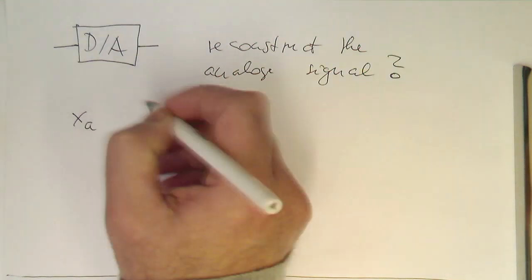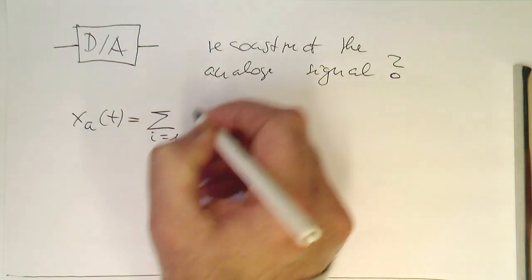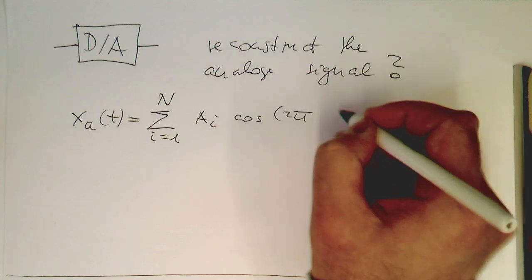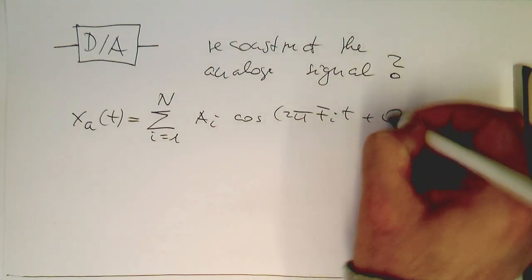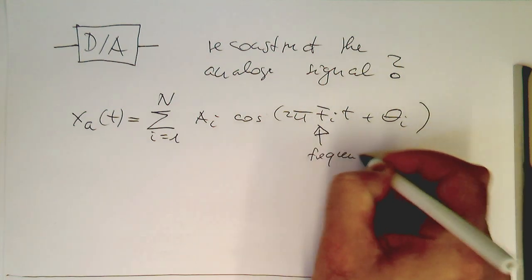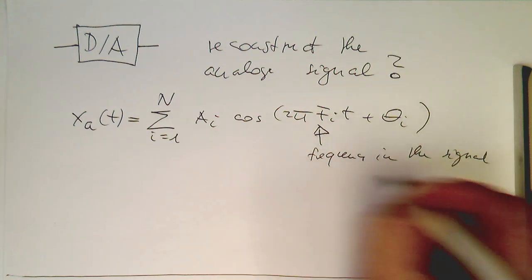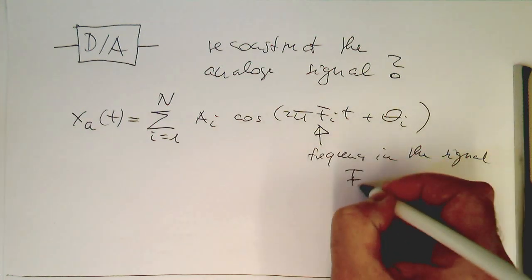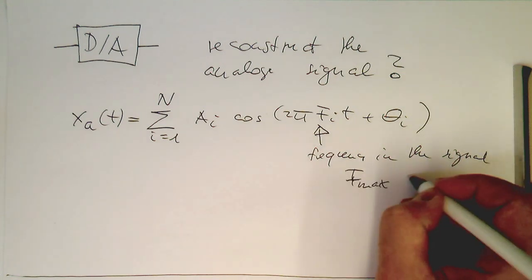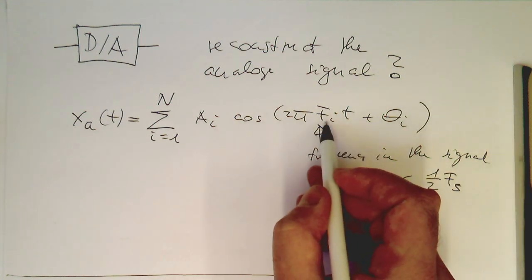So let's describe our signal as a superposition of different sine waves. So let's say cosine and then pi f i t plus theta i. So these are all the frequencies in this signal. And obviously all these frequencies, so f, if we have a maximum frequency here, this f max needs to be obviously smaller than half of the sampling rate. So we know this, otherwise it won't work.